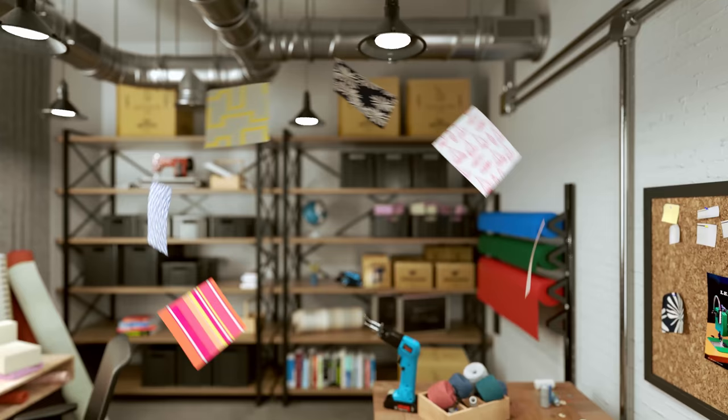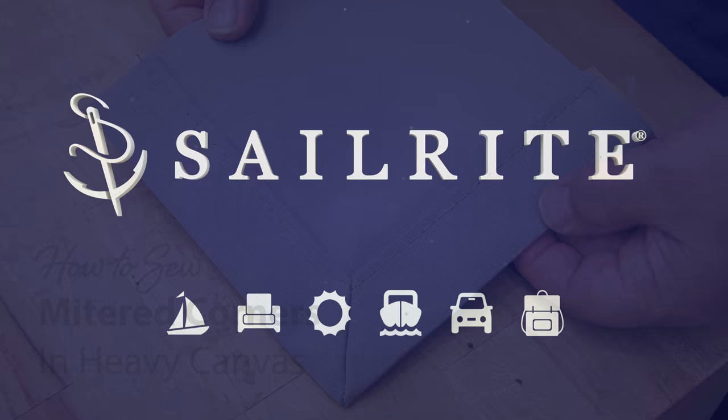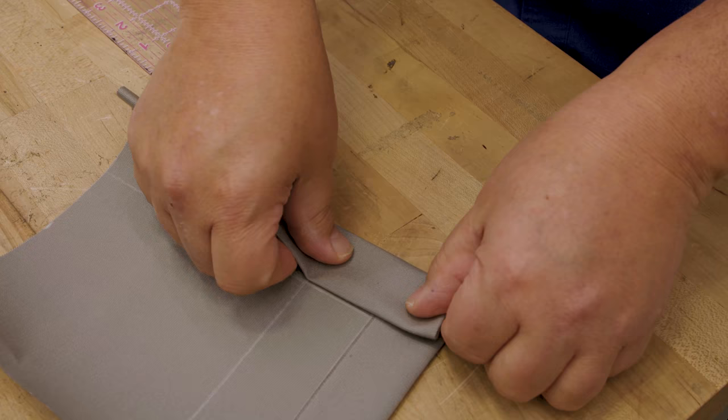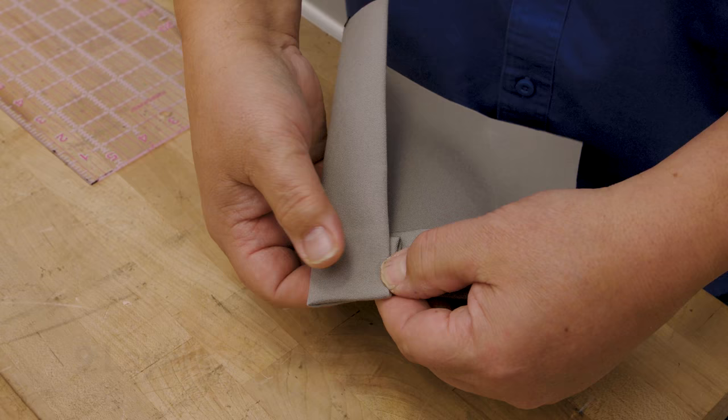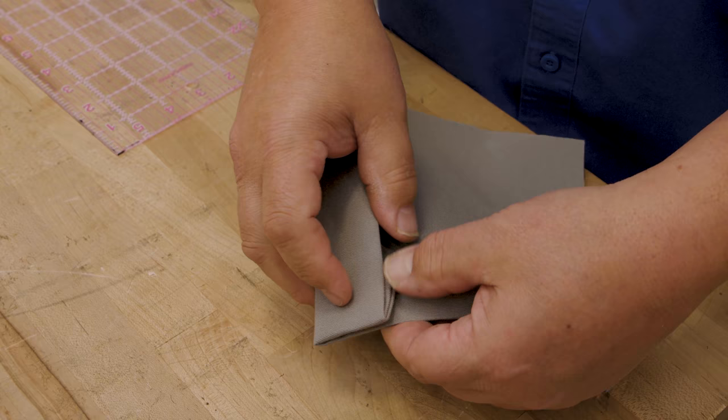Visit Sailrite.com for all your project supplies, tools, and instructions. In this video, we're going to show you how to make mitered corners in heavy canvas fabric.